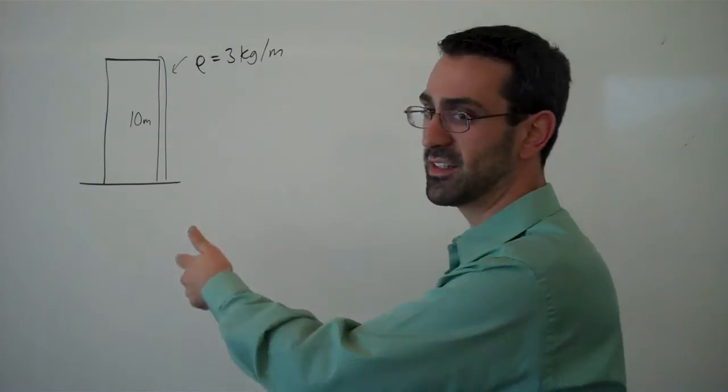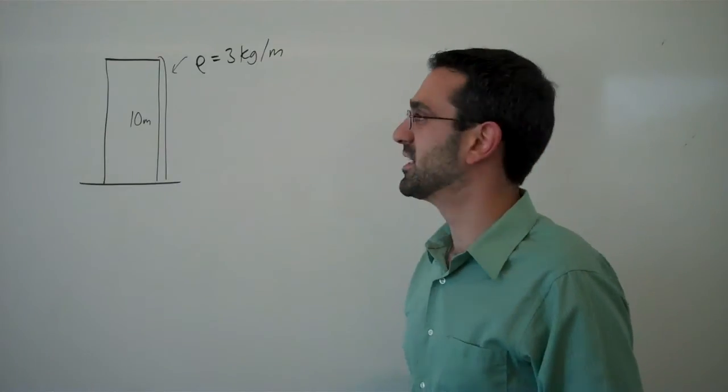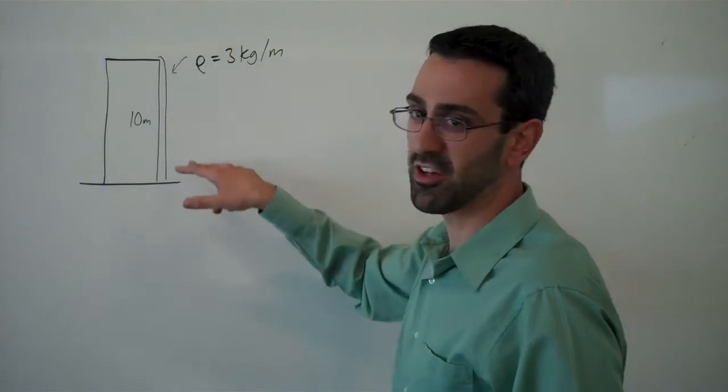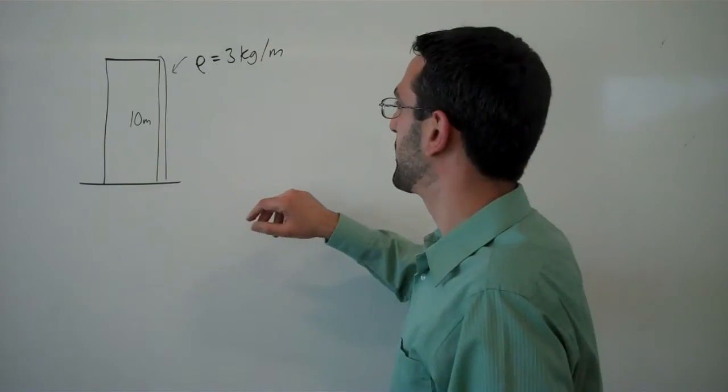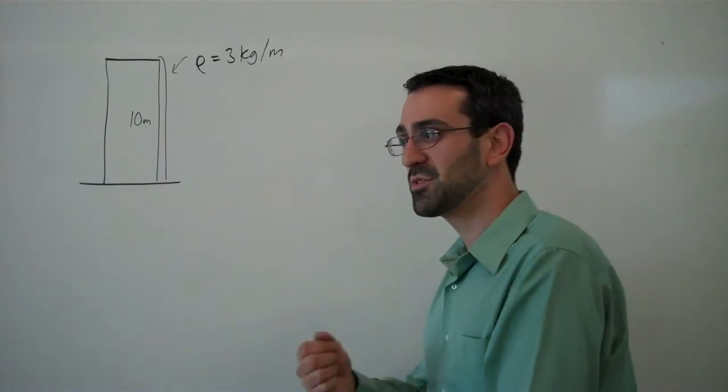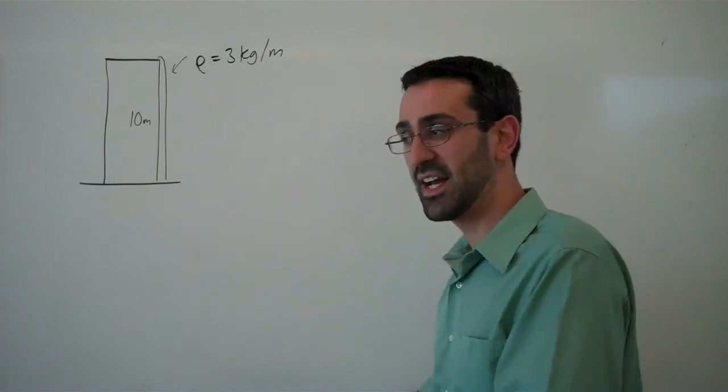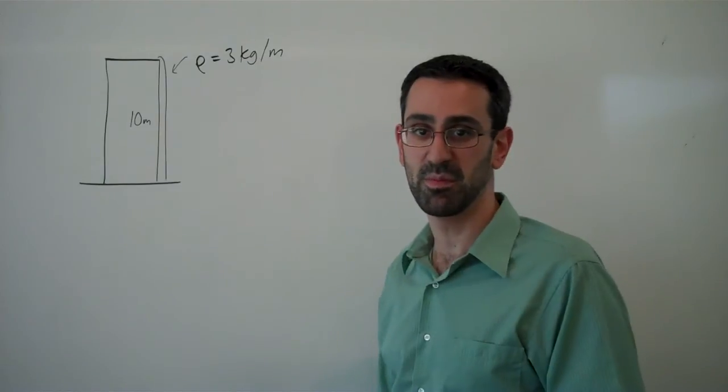So at the very beginning, we have a very large length of chain and so we have a very large mass. So we have 30 kilograms of mass at the very beginning. But as we start lifting up the chain, the mass that we're having to lift is going to decrease as we pull the chain up onto the top of the building.